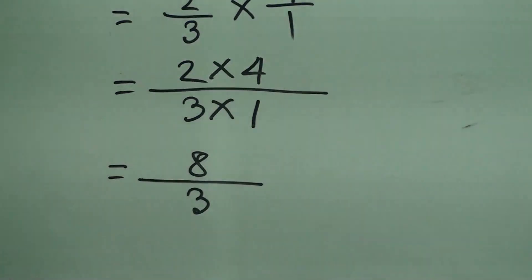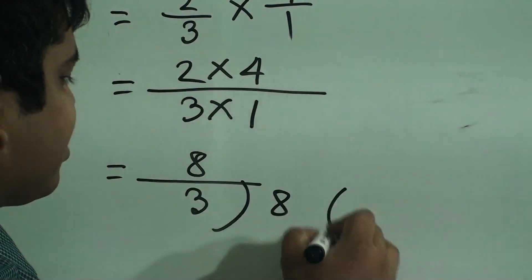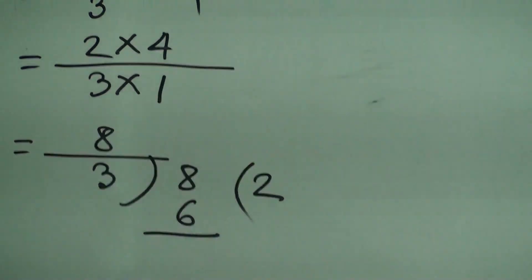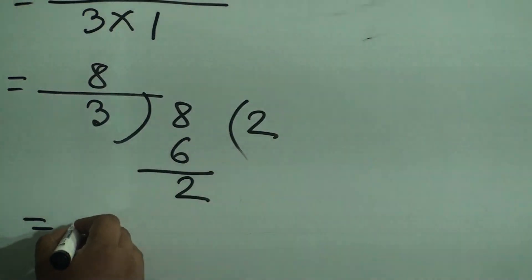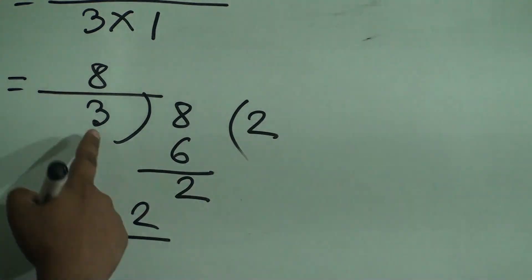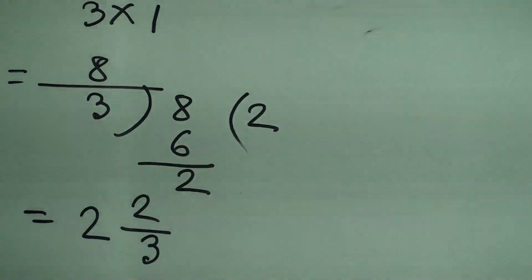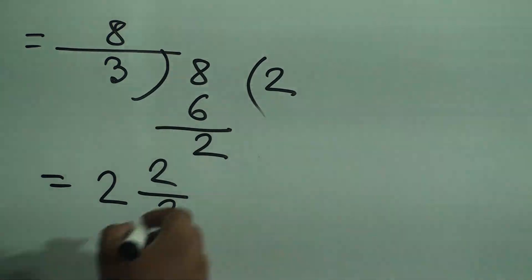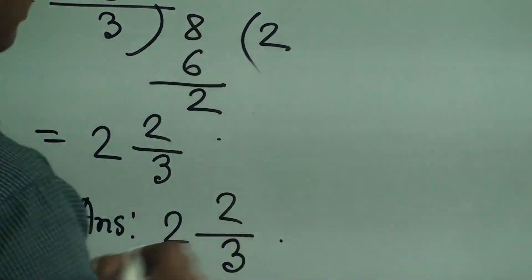Is 8/3 a proper or improper fraction? This is an improper fraction, so we convert it into a mixed fraction. We do division: in 8, 3 goes 2 times; 3 twos are 6; after subtraction we get 2. So the quotient will be the integer, the remainder will be the numerator, and the divisor will be the denominator. The answer is 2 and 2/3. We must write the answer.